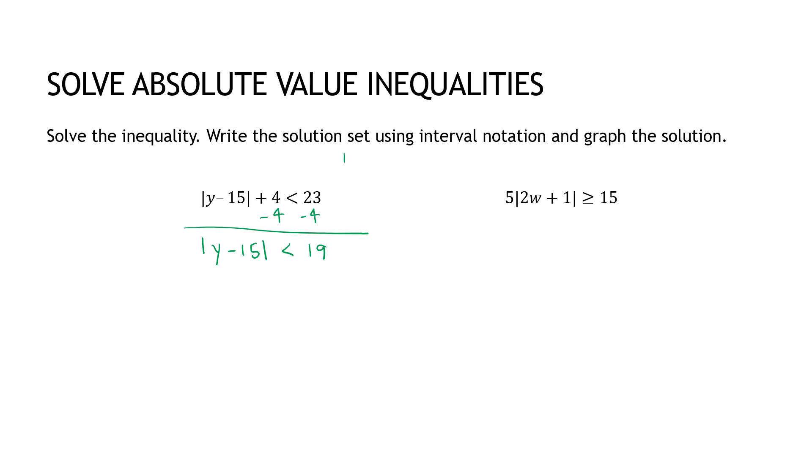It's a less than question. And whenever I'm dealing with an and question, the easiest way is to take the value, make it negative, stick it on the left side, and then write what you have left over. Because this is two inequalities, it's just written in a more compound fashion. Now add 15 everywhere. So negative 19 plus 15 is negative 4. Y minus 15 plus 15, obviously those things cancel. 19 plus 15 is 34. And now that's my answer.